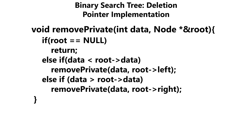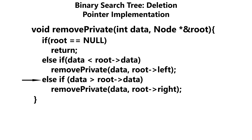Just as a side note, our root pointer is being passed in by reference, so we're working with our original and not a copy. Now if we hit any of these three conditions, that means we're currently searching for the node that we have to delete. Our if statement tests to see if the root is null — if it is, it means our tree is empty, so there's nothing to delete and we just return. If we come down here, we test to see if the data is less than the data at the current node, and if it is, we recursively call remove private passing in data and the left child, continuing our search within the left subtree. If the data is greater than the data at our root, we make a recursive call passing in data and the right child, continuing our search within the right subtree.